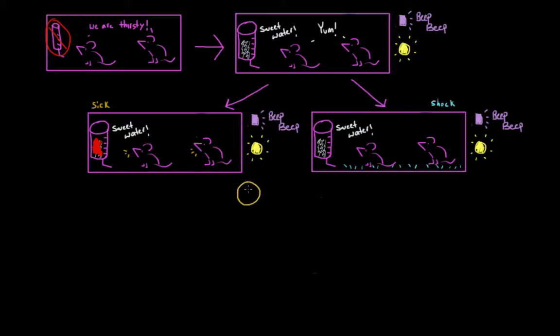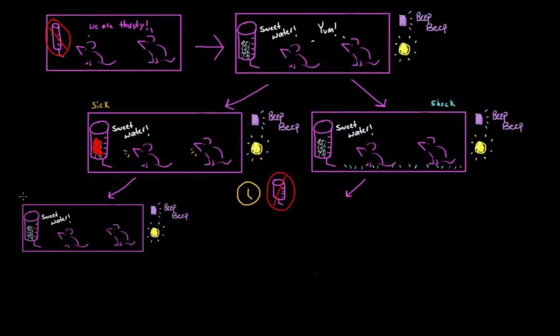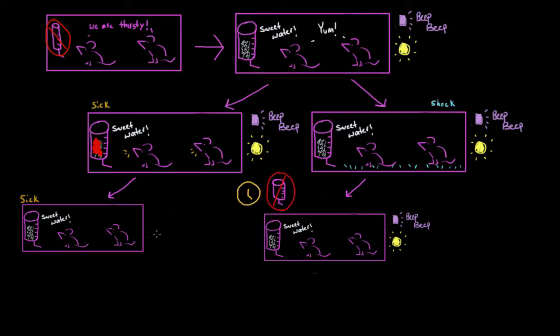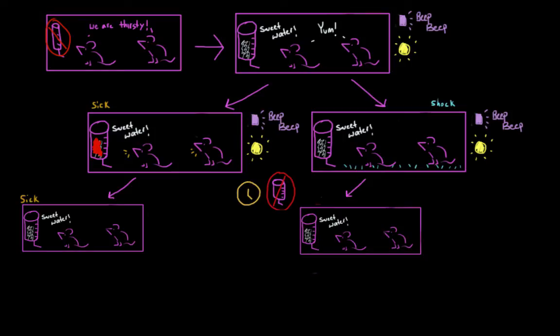And after this, some amount of time goes by where the rats are deprived of water again. And the rats are then put back into those same cages. They're put back in the same situation. So now half the rats in the first group, the group that got physically ill, and half the rats in the second group, the group that got an electrical shock, they're going to get sugar water again. But this sugar water is presented without the light and the tone. So it has that same sweet taste, but there's nothing external that happens when they drink.